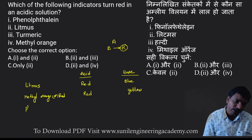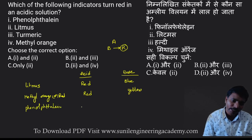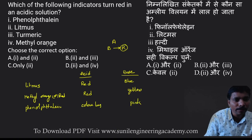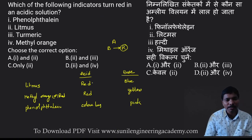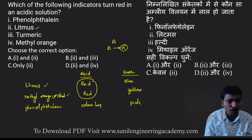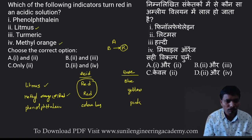Let us take phenolphthalein. In the case of acidic solution it becomes colorless, and in the case of base it gives pink color. So the indicators that convert the solution to red in acidic conditions are litmus and methyl orange or methyl red — that is options two and four. So two and four is option D. Option D is correct.